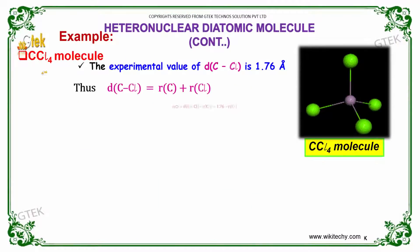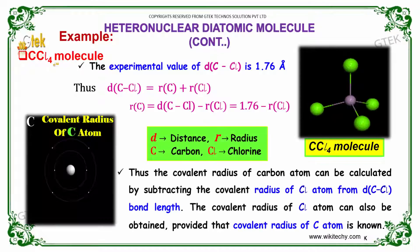Here is a typical example. I have a CCl4 molecule. The experimental value of the bond length, d(C-Cl), is 1.76 angstrom. The bond length equals radius of carbon plus radius of chlorine. Therefore, radius of carbon equals bond length of carbon-chlorine minus radius of chlorine, which is 1.76 minus radius of chlorine.